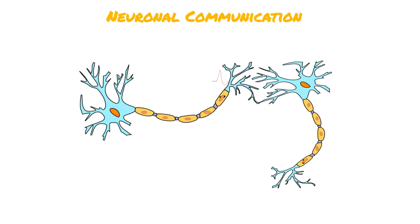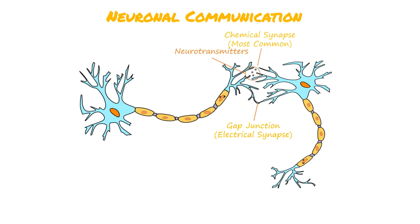Once the action potential reaches the end of the axon, the message is transmitted to the dendrites of the neighboring cell through one of two ways. An electrical signal can pass across points of direct contact known as gap junctions, or more commonly, the action potential triggers the release of chemical signals known as neurotransmitters from the axons to the dendrites. The gap across which neurotransmitters are released is known as a chemical synapse.